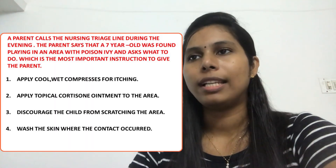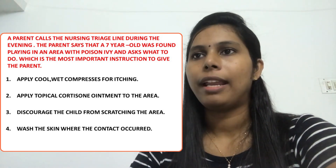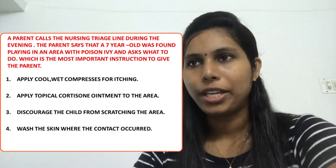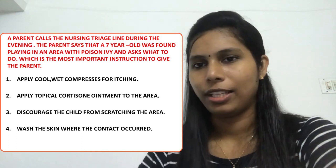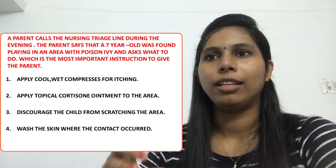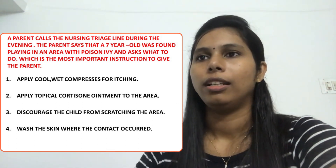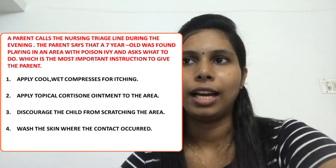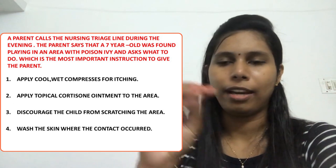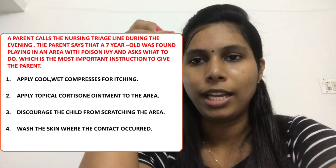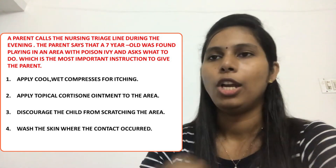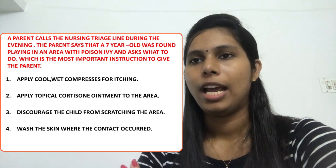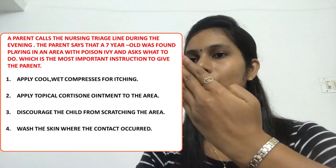Next question: A parent calls the nursing triage line during the evening. The parent says that a 7-year-old was found playing in an area with poison ivy and asks what to do. Which is the most important instruction to give the parent? Options: one — apply cool wet compresses for itching; two — apply topical cortisone ointment to the area; three — discourage the child from scratching the area; four — wash the skin where the contact occurred.